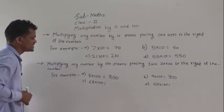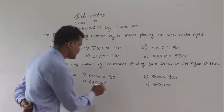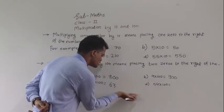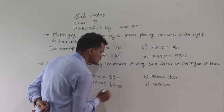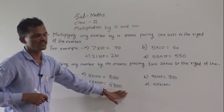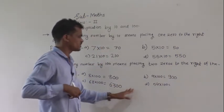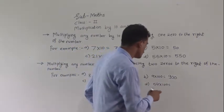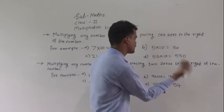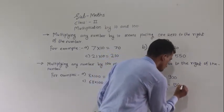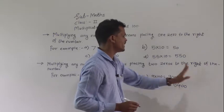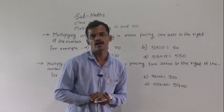Then 63 multiplied by 100: write 63 and at the right of that 63 put 2 zeros, so 6300 is the answer. Then 54 multiplied by 100: write 54 and at the right of that 54 put 2 zeros, so 5400 is the answer.